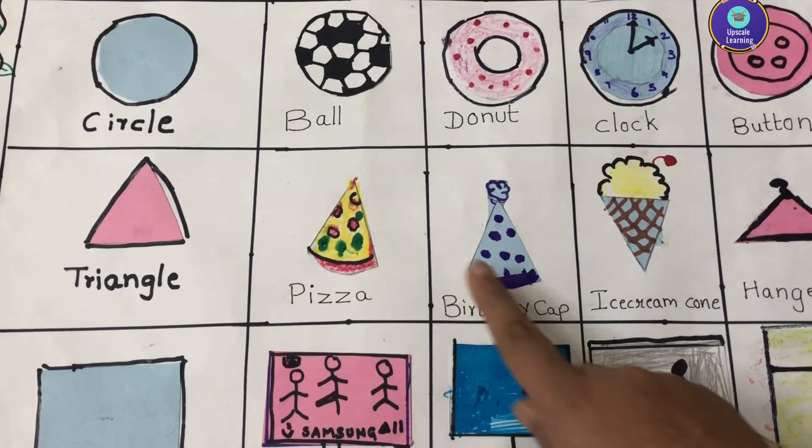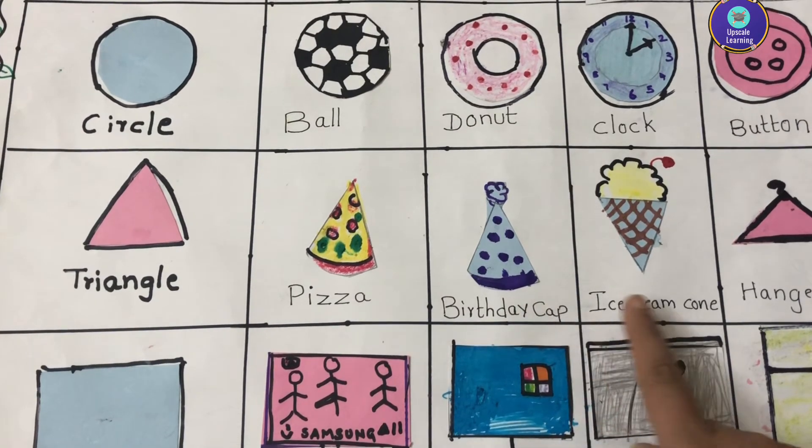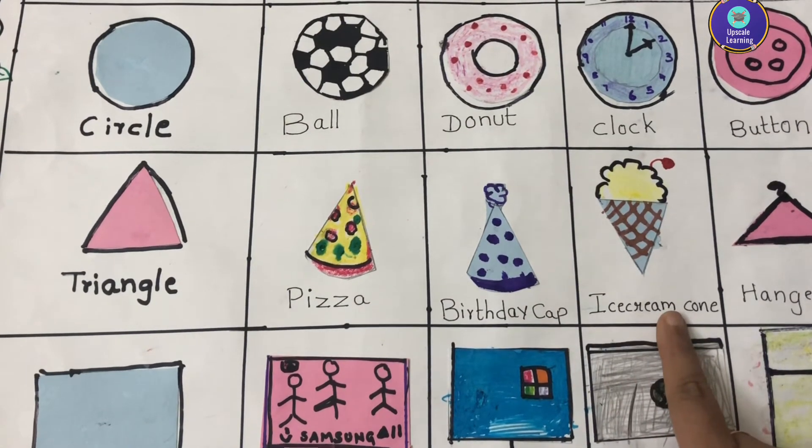In triangle shape we have pizza slice, birthday cap, ice cream cone and a cloth hanger.